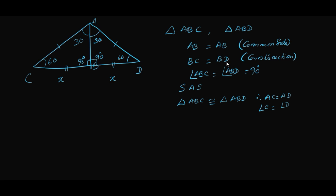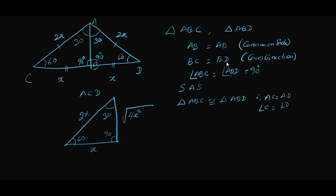Now the whole triangle ACD becomes an equilateral triangle with side x plus x, that is 2x. So in any right-angle triangle with 30° and 60° as the two other angles, the hypotenuse is twice the side opposite to 30°. With hypotenuse 2x and the side opposite 30° as x, we apply Pythagoras: the remaining side is √(4x² − x²) = √(3x²) = x√3.